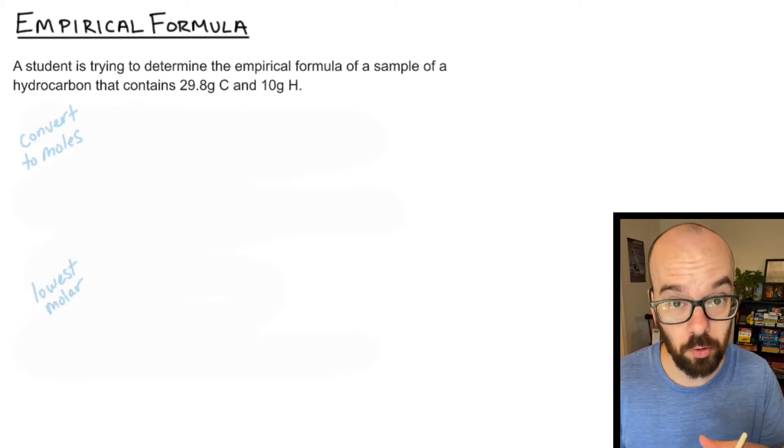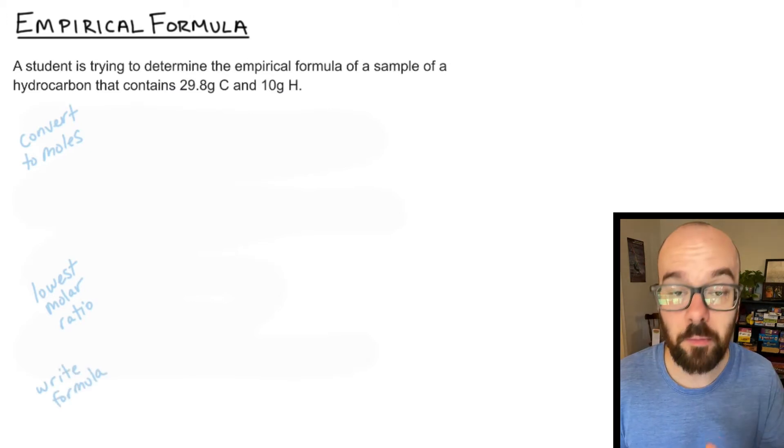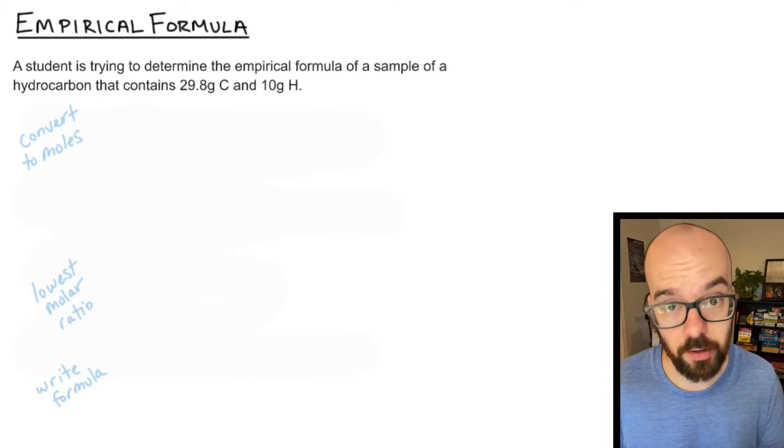First we're going to convert to moles. We'll be given grams of each of the elements, convert those to moles. Then we'll find the lowest molar ratio. In other words how many hydrogens do I have per carbon? And then we'll write the empirical formula for that compound.